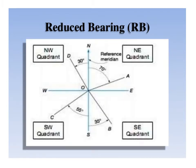In this slide, four lines OA, OB, OC, and OD are shown, and their values measured from north in clockwise as well as anticlockwise direction are shown. Quadrant number 1 is the north-east quadrant, quadrant number 2 is the south-east quadrant, quadrant number 3 is the south-west quadrant, and the north-west quadrant is the fourth quadrant.